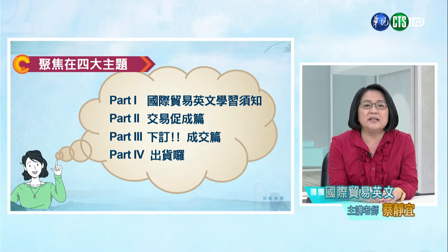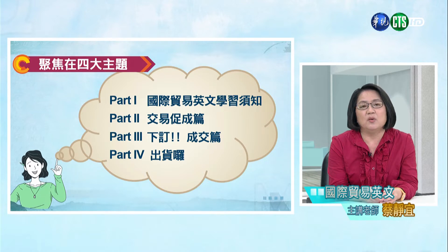在往後的十八講裡面，我們會談論到國際貿易英文的學習。我會花兩個講次先讓同學有基本概念，之後再談論如何促成交易、第三部分的下訂跟成交，以及第四部分的出貨。各自不同的貿易階段，在擬出相對應信函的時候應該要怎麼做、注意哪些事項，這就是我們後面十八週涵蓋的內容。以上先跟同學做簡單的課程介紹。